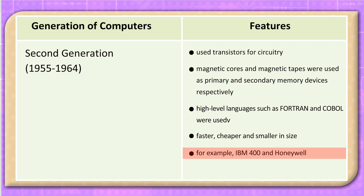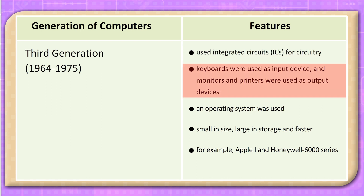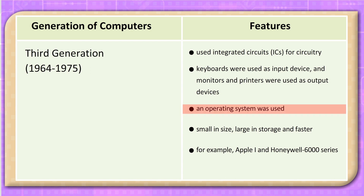Third Generation, 1964–1975: Used Integrated Circuits (ICs) for circuitry. Keyboards were used as input devices, and monitors and printers were used as output devices. An operating system was used. These computers were small in size, large in storage, and faster. Examples include Apple II and Honeywell 6000 Series.